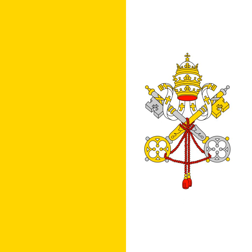The Papal States traditionally used a yellow and red cockade, the traditional colors of the Roman Senate and the Roman people. However, these colors were not used on flags. In 1808, Pope Pius VII ordered the Vatican's noble guard and other troops to replace red with white, in order to distinguish them from the troops that had been incorporated into Napoleon's army. In 1803, the Papal States started using a white merchant flag with the Papal coat of arms in the center, and this flag was made official on 7 June 1815.